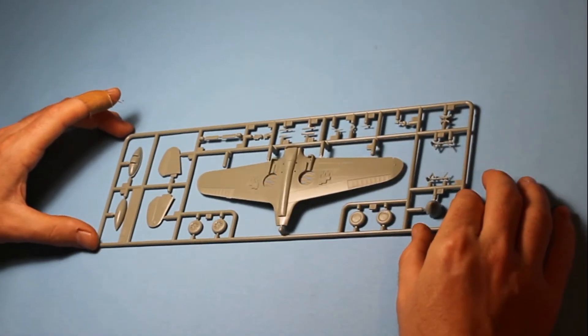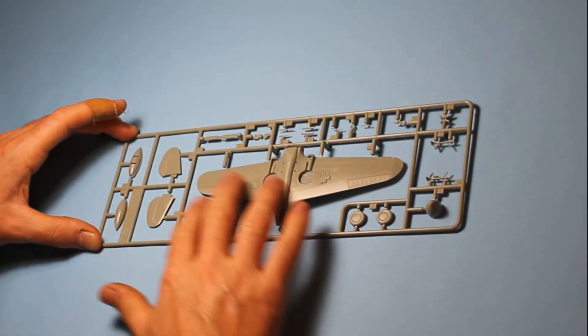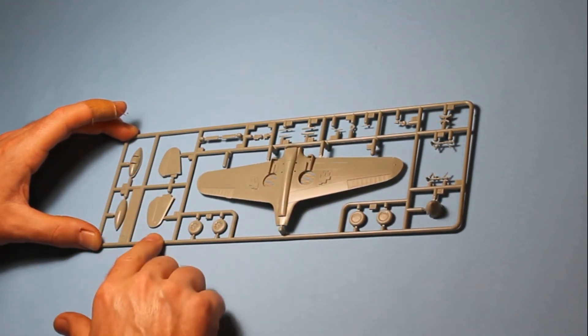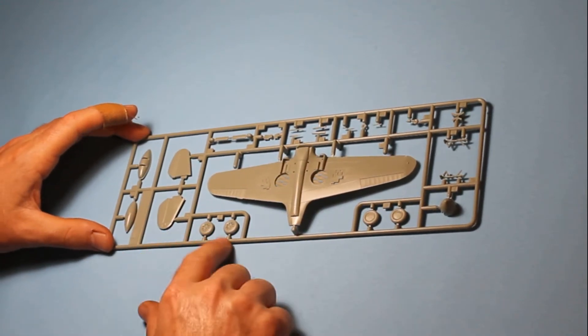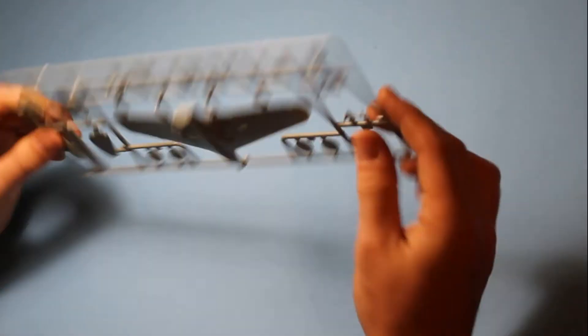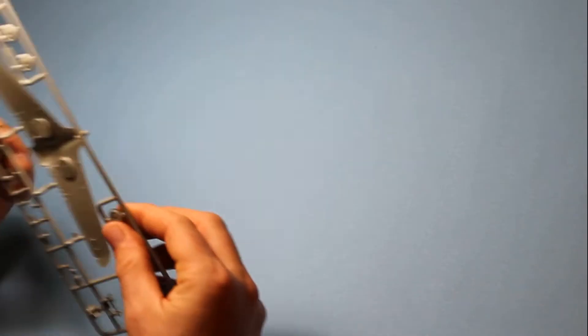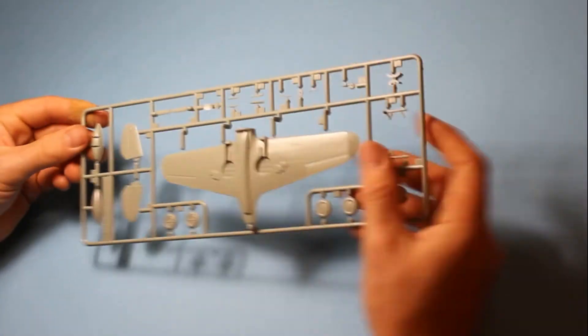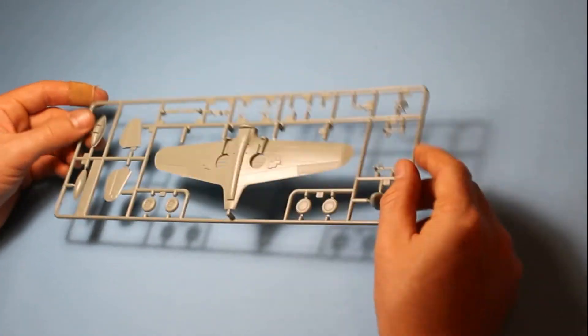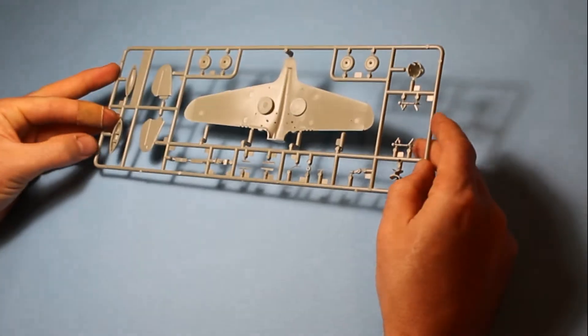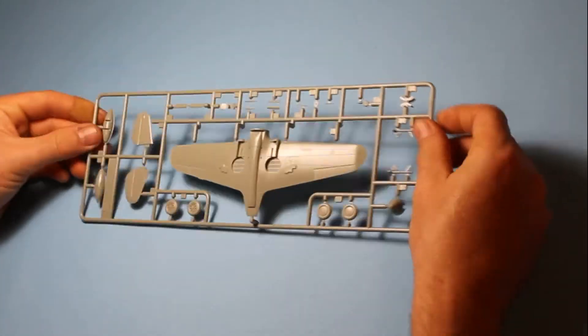Then we've got another sprue here with the underside of the wing and the bottom of the fuselage, as well as some of the rear horizontal stabilizers and the wheels here, which are molded in one complete section. There is a seam line running down them, but quite good tread pattern. They actually look very good. With the tail wheel and a few other parts, smaller details for the exterior of the aircraft.